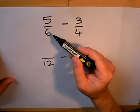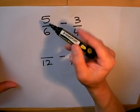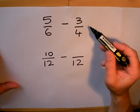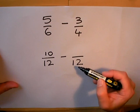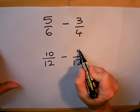Because I've multiplied 6 by 2 to make it into 12 I need to do the same to the top. 5 times 2 is 10. Because I've multiplied 4 by 3 to make it into 12, then I multiply 3 by 3 as well and that gives me 9.